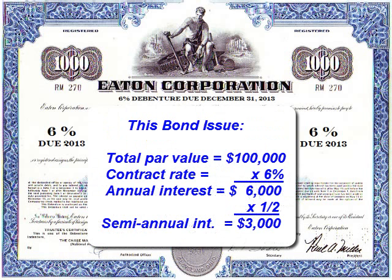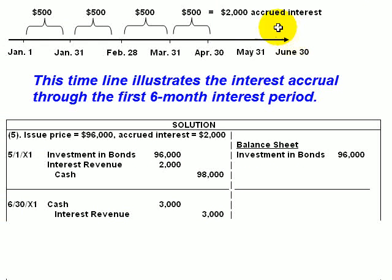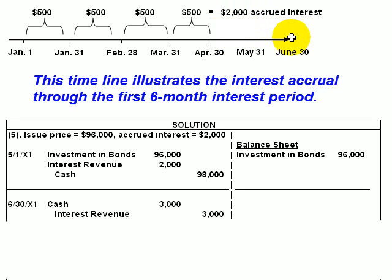When bonds are sold between interest payment dates, a problem arises. The bond indenture is going to require the issuing company to pay a full six months interest every June 30th and every December 31st. But if the bonds are not issued until May 1st, then they'll have only been outstanding through two months as of June 30th. But our corporation is going to be required to pay a full six months interest, $3,000, on June 30th.